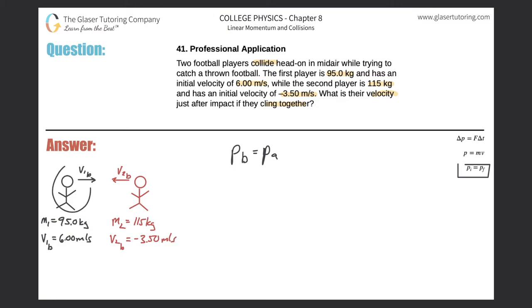So let's expand these terms a little bit. The momentums before the collision—remember there's two objects separated—so it's going to be the momentum of the first player plus the momentum of the second player, and that should then equal the total momentum when those two players are now clinging together.